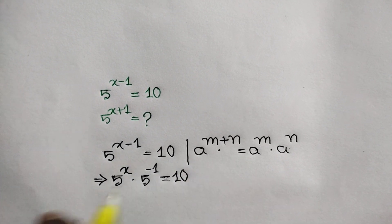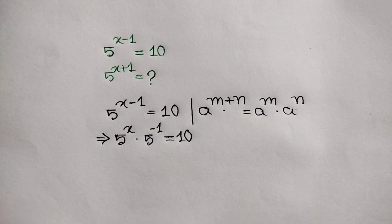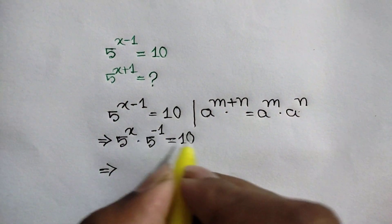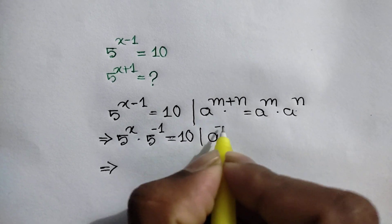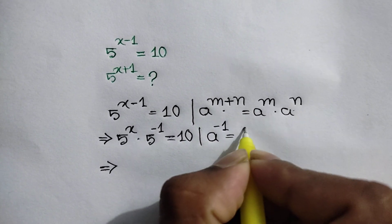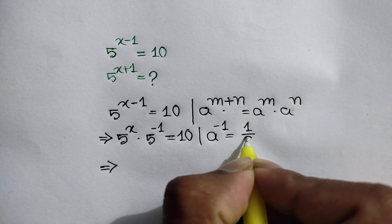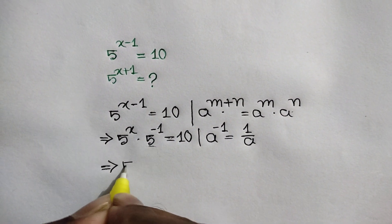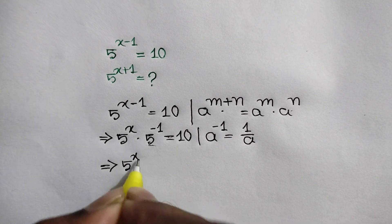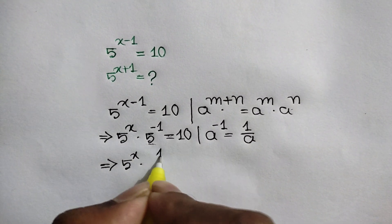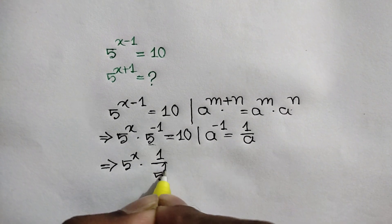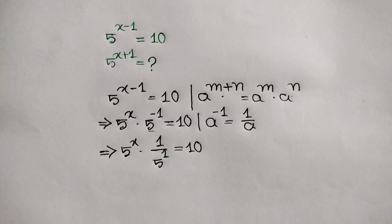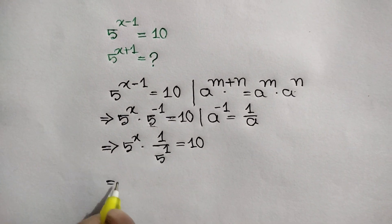We know a to the power negative 1 is equal to 1 over a. Applying this rule here, we can write 5 to the power x times 1 over 5 is equal to 10.